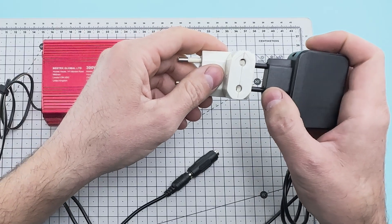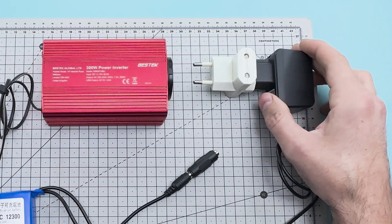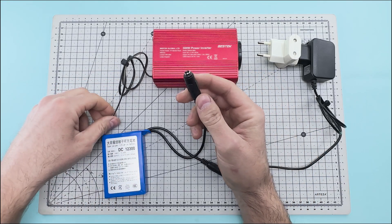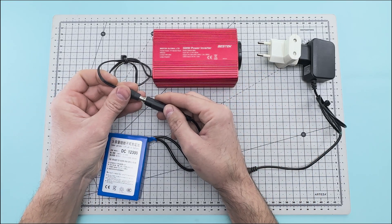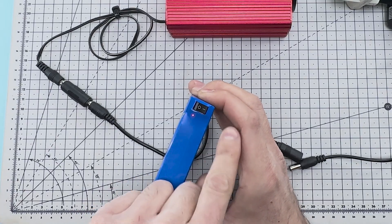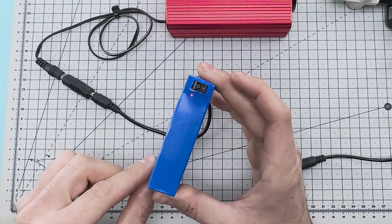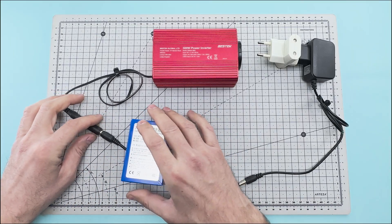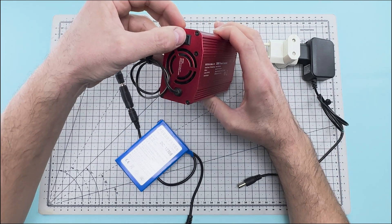We connect it to a multi-plug power strip. We connect the power inverter to the lithium battery. Now we press this switch to turn on the battery and turn on the power inverter.